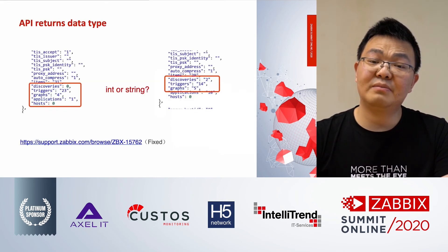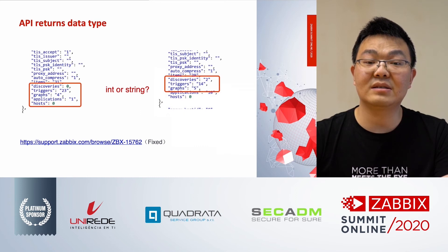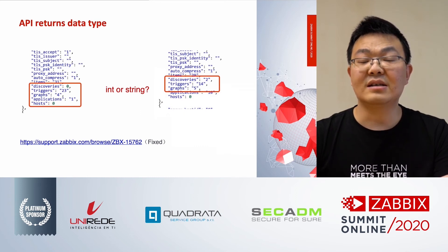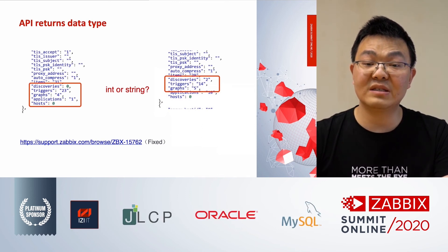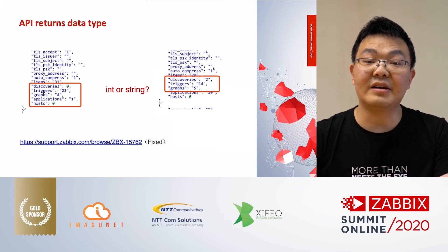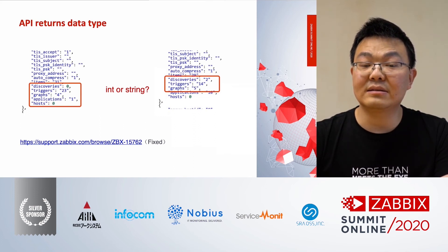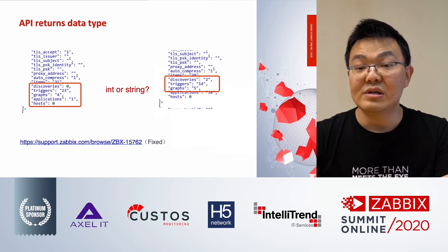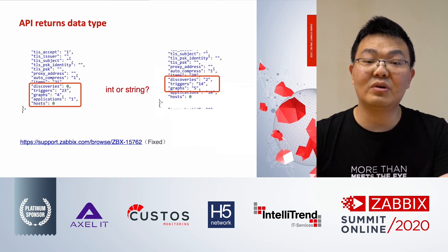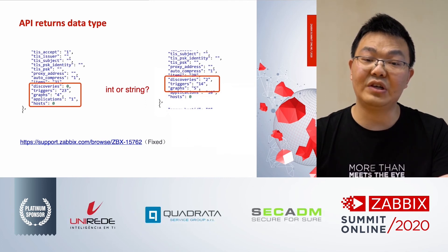If you use PHP in the previous version of the database, the API will return different formats. For example, you can find a video ID on the discovery in the server. As a developer, you will know this data is of type int. While in the right version, you will find it in quotes — the value type is string. It leads to different data types. In other words, you have two different data types for the same API. This is fine for PHP, which is a weakly typed language and can return the value correctly.